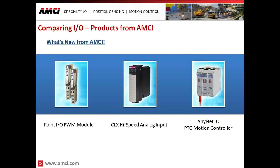Before the Q&A section, AMCI has some new modules to highlight. These include a PWM (pulse width modulated) module for point IO — a great solution for controlling proportional control valves — a high-speed analog input module for ControlLogix, ideal for data acquisition applications, and on the AnyNet IO platform, similar to the ANG1, a PTO (pulse train output) motion controller.